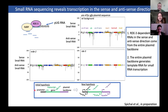Our initial hypothesis — that the promoter would be necessary to transcribe the transcript — seemed to be wrong. Our new hypothesis was that transcripts could be generated over the entire plasmid backbone, coming from both the sense and antisense direction.